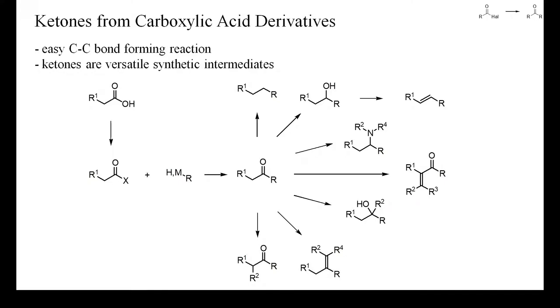For instance, ketones can be reduced to alkanes by the Clemmensen or Wolff-Kishner reduction, or to alcohols or amines by catalytic hydrogenation or with borohydrides. Ketones also undergo condensation with aldehydes or other ketones and react with carbon nucleophiles to yield tertiary alcohols.